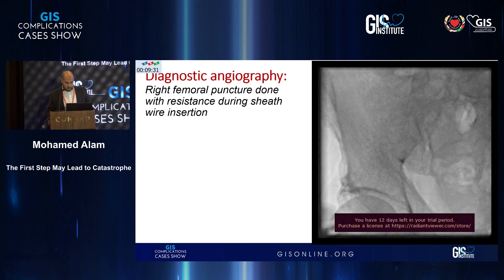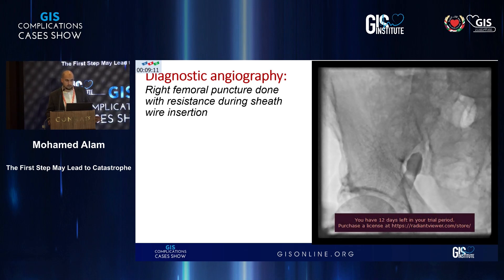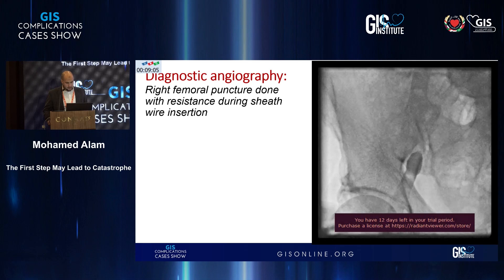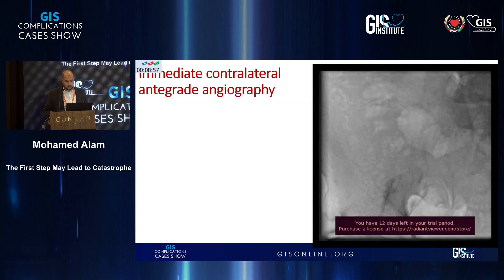Our colleague started to puncture from the right femoral approach, as it was the default strategy at our center, but he felt resistance during J-shaped wire insertion inside the puncture and took a look. It may have been a dissection or subcutaneous. At this point the patient started to have agonizing pain at his right groin, so we immediately performed contralateral antegrade angiography via the left femoral approach and took a picture.